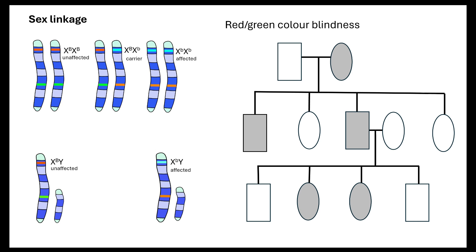In an inheritance diagram, squares represent males and circles represent females; white means unaffected and a shaded symbol means affected. Starting with colour blindness, if we see a shaded circle — an affected female — that tells us that female must have two recessive alleles on her X chromosomes.